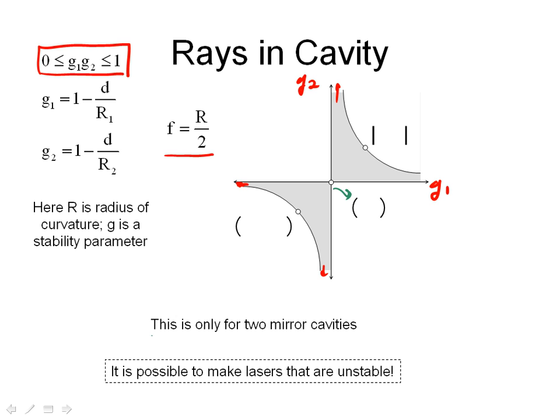You can of course derive things for cavities with more than one mirror — I've built seven and eight mirror cavities before, but we're not going to do that in this class. It's also possible to make lasers that are unstable. Stability is not a prerequisite to have a laser, and in fact a lot of the most powerful lasers do have unstable cavities. We may talk about that and some of the advantages of unstable cavities if we have time at the end of the semester.